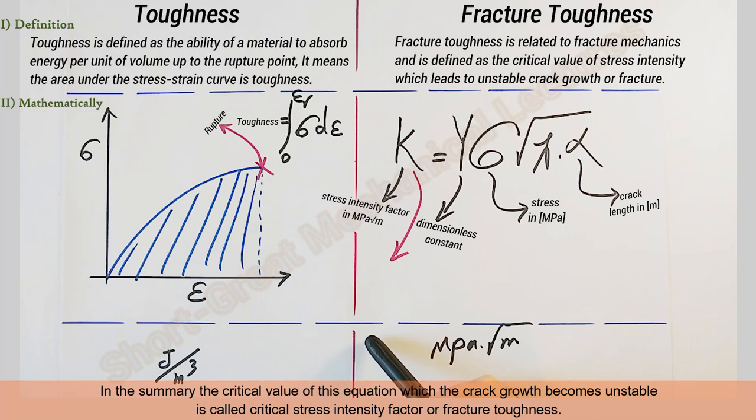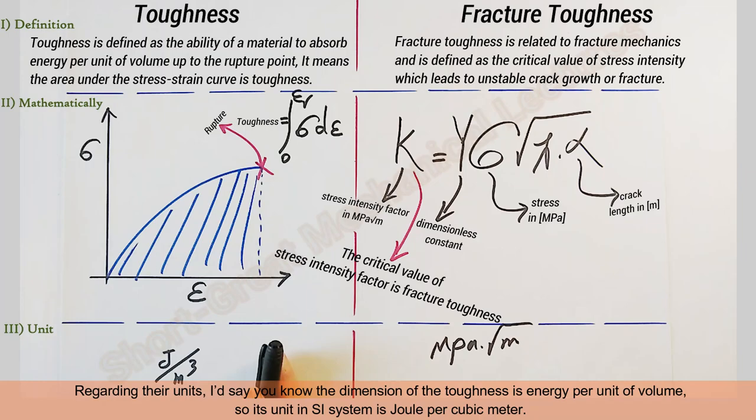In summary, the critical value of this equation, where the crack growth becomes unstable, is called critical stress intensity factor or fracture toughness.